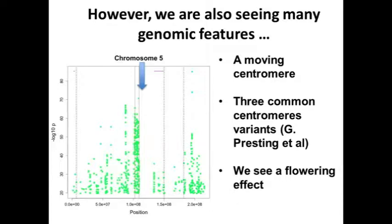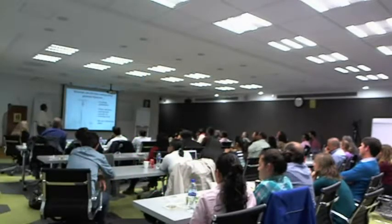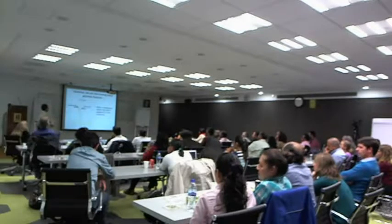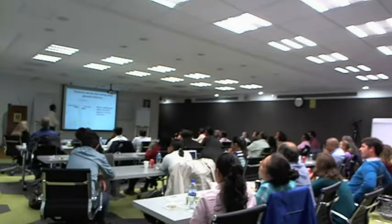I think that's what we're seeing here with these structural regions of the genome. Essentially the centromere on chromosome 5 — the center of it — has moved around, and Grinot-Prestin has identified that. Different land races and different inbreds have different centromere locations relative to one another, and we see a big GWAS hit right there. On chromosome 3, again at the centromere, we see a big GWAS hit there.